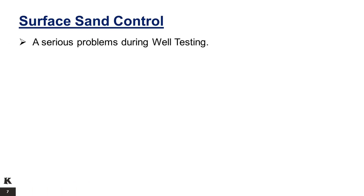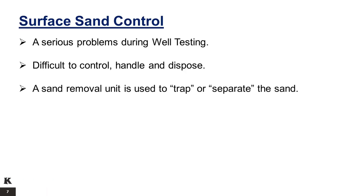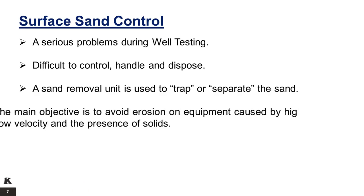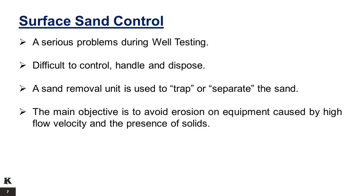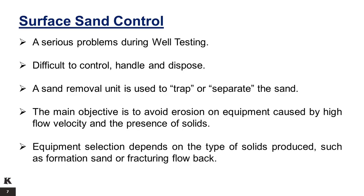Surface sand control. Sand production is one of the serious problems during testing a well. It is difficult to control, handle, and dispose, and whenever it is present, special equipment and procedures are introduced to the test program in order to perform the job safely and reliably. A sand removal unit is used to trap or separate sand from flowing hydrocarbons for reliable and safe measurements. Whenever solids are produced during a well test or cleanup operations, sand handling equipment is required. The main objective is to avoid erosion on equipment caused by high flow velocity and the presence of solids. The type of purpose-built equipment used depends on the type of solids produced, such as formation sand or fracturing flowback.